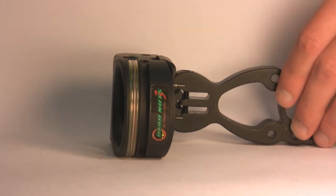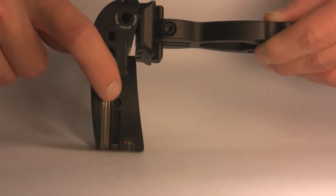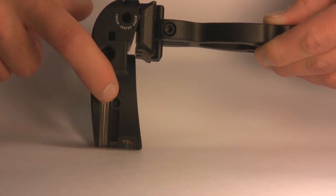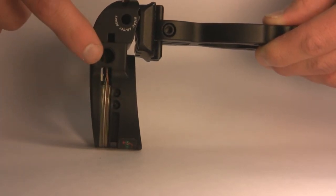If you happen to be a left handed archer, not to worry. You can move the level to the top of the sight. This sight also accepts a light.